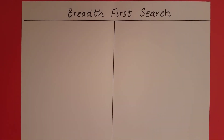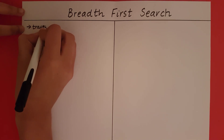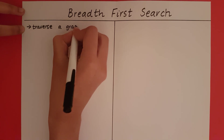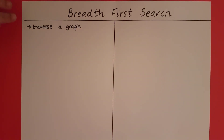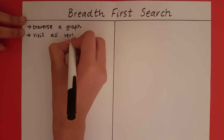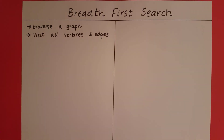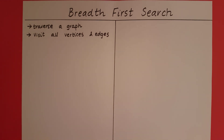Breadth-first search is an algorithm to traverse a graph — meaning we visit all the vertices and edges. In the previous videos we looked at depth-first search, which is another way to traverse the same graph. Before we go into the actual steps required to perform breadth-first search, let's first understand how it is going to be different from depth-first search.